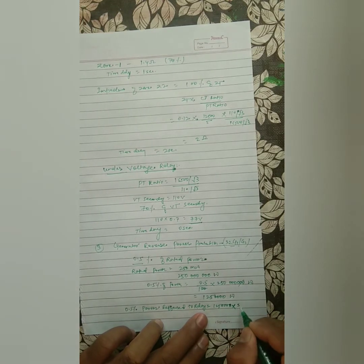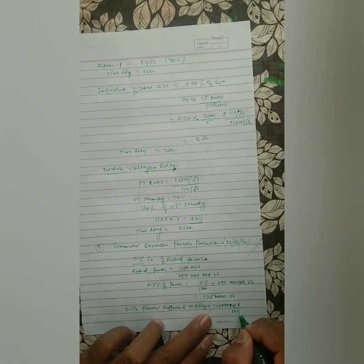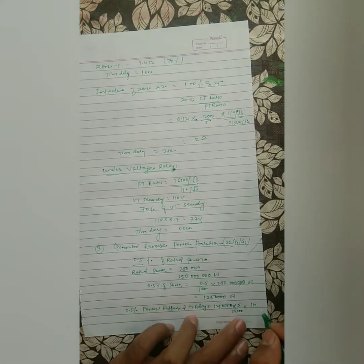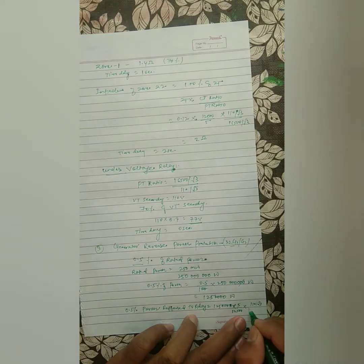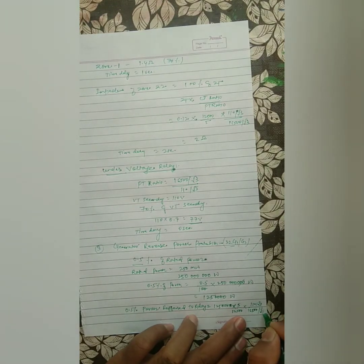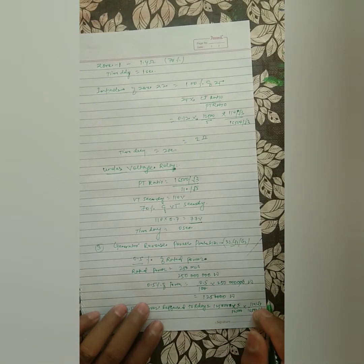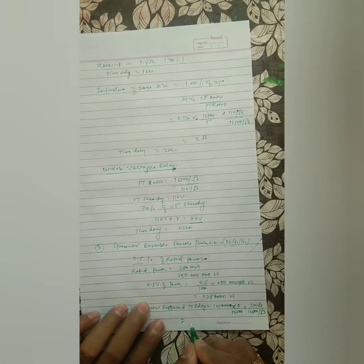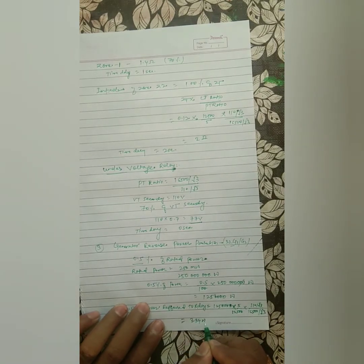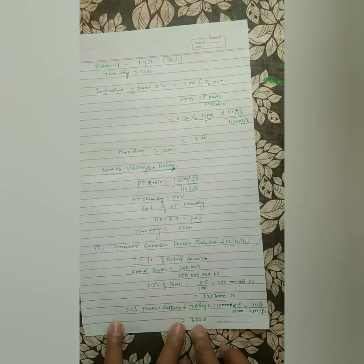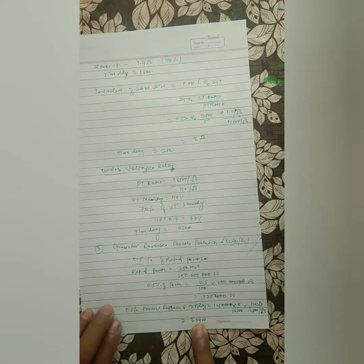With respect to secondary, we calculate: 1,212,500 × (PT ratio 110/√3 divided by 16500/√3). The calculated value referred to the relay comes to 3.34 watts. So the relay will see 3.34 watts.